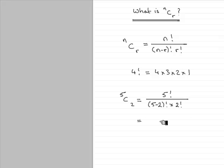Working this out, 5 factorial would mean 5 times 4 times 3 times 2 times 1, and all of this would be divided by 5 take away 2, which is 3, 3 factorial. So 3 factorial is 3 times 2 times 1, and then we would multiply this by 2 factorial, which would be the 2 times 1. Working this out, you'd find that you get 10.